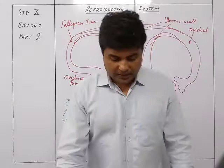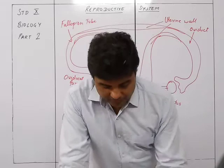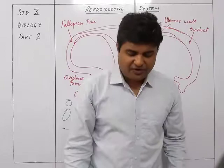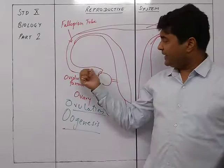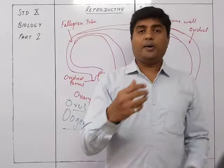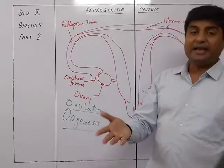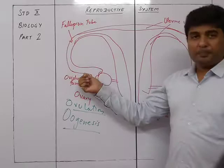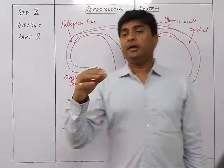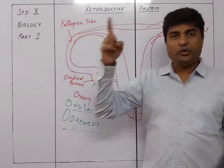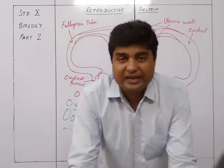The releasing of the egg through rupture of the Graafian follicle is called ovulation. The released egg is picked up by the fimbriae of the oviductal funnel. Fimbriae are hair-like cilia present in the funnel which gently catch the egg, and by the sweeping movement of the cilia the egg is pushed up into the oviduct.